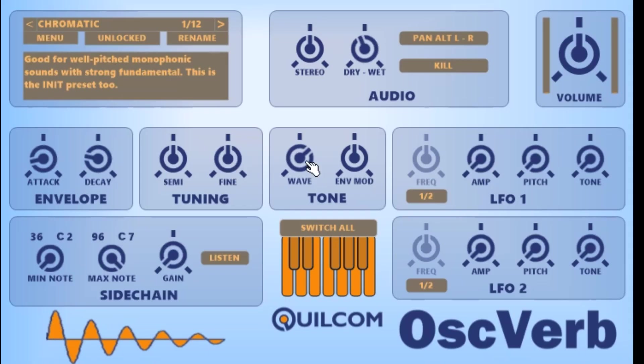Now the 61 synthesizers only respond to discrete pitches, but because of the shape of the filter there is a smooth transition from one pitch to another. But if you bend a note slowly, you can hear these discrete steps.